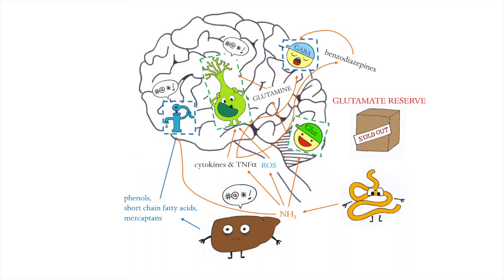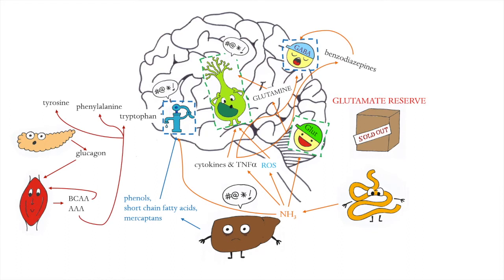But this is not all. Due to the liver disease, pancreas produces glucagon that induces muscle catabolism and release of amino acids. Now, branched chain amino acids are metabolized within the muscles, but aromatic amino acids should be metabolized by the liver that cannot, so they also reach the central nervous system.